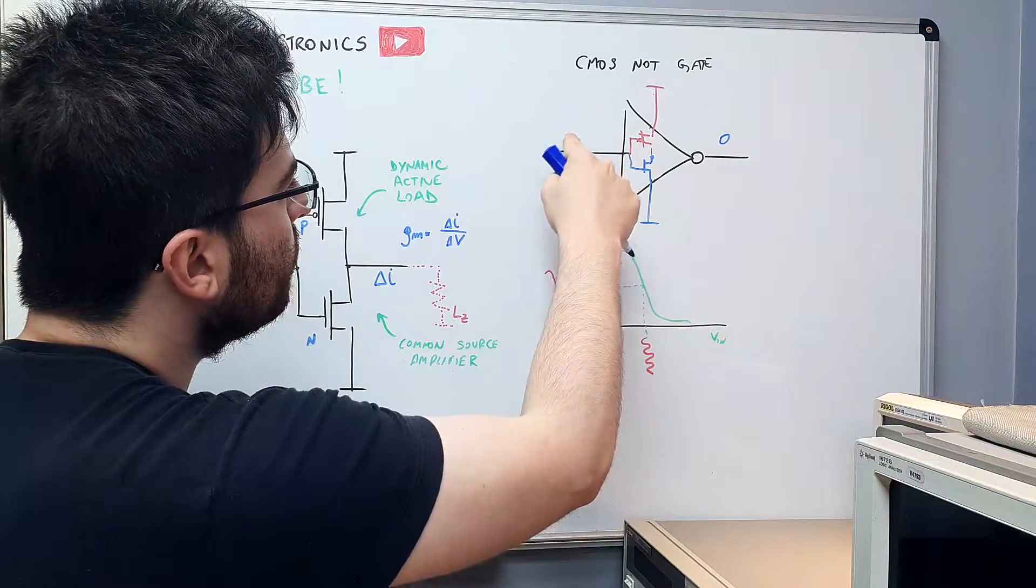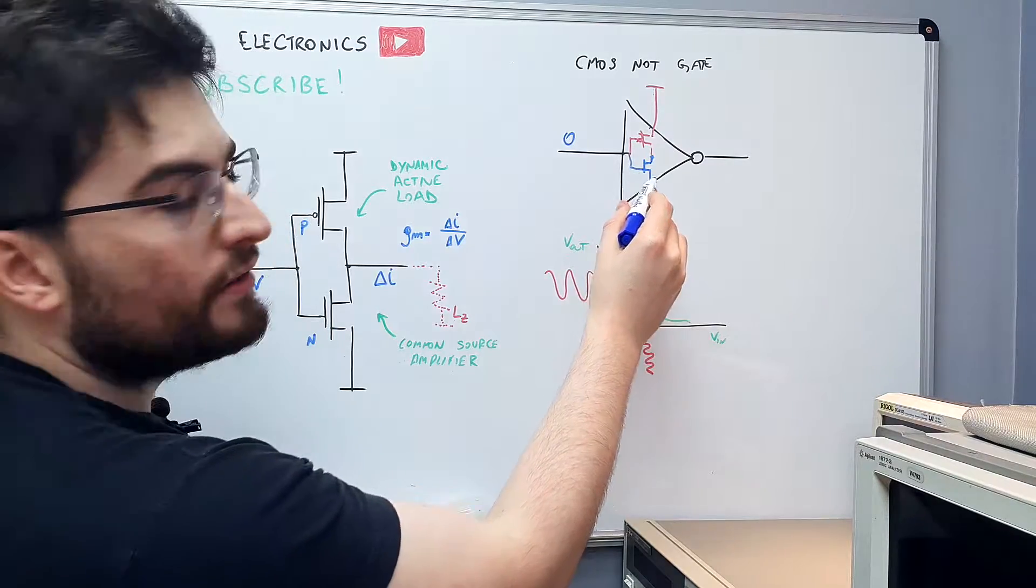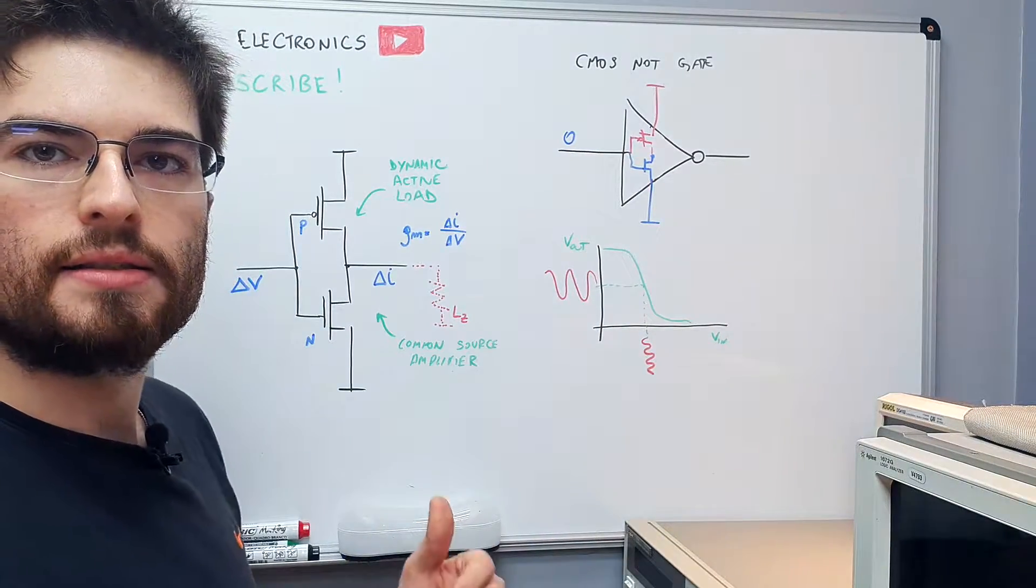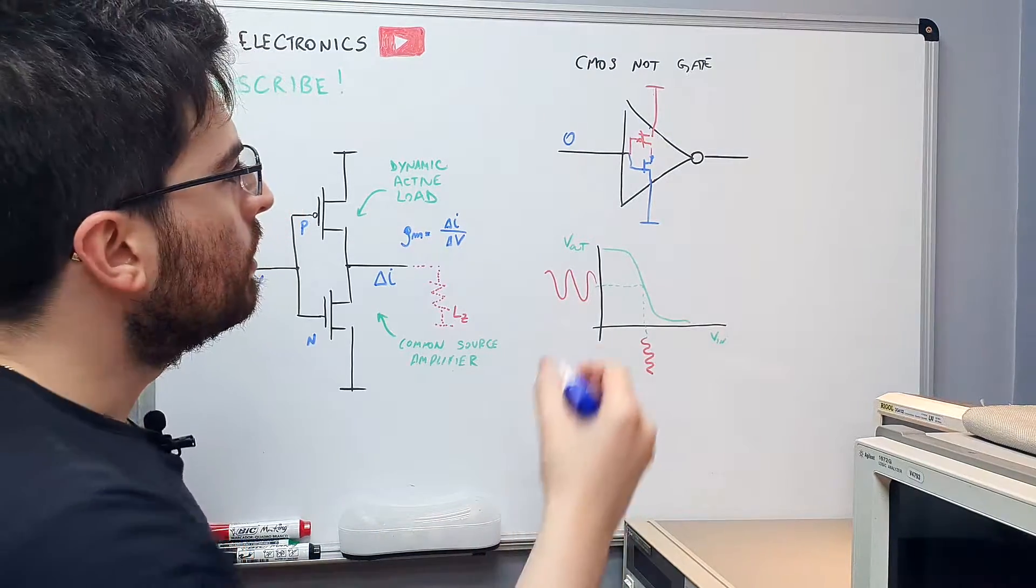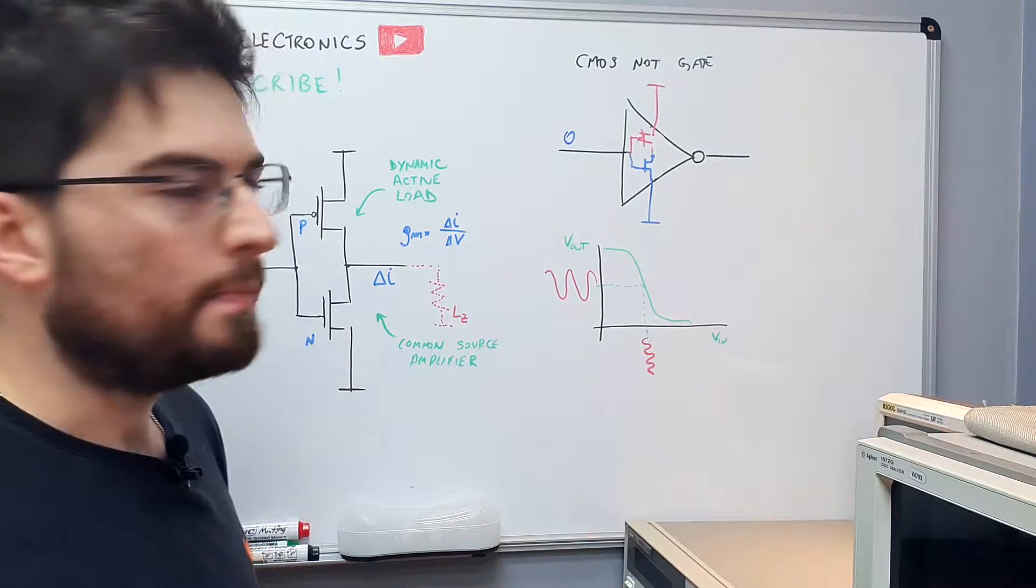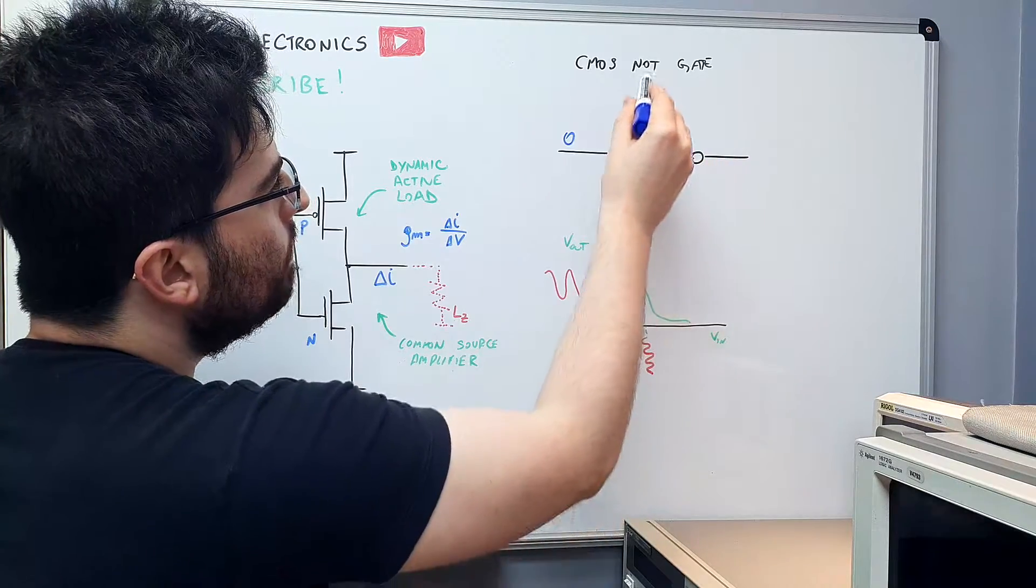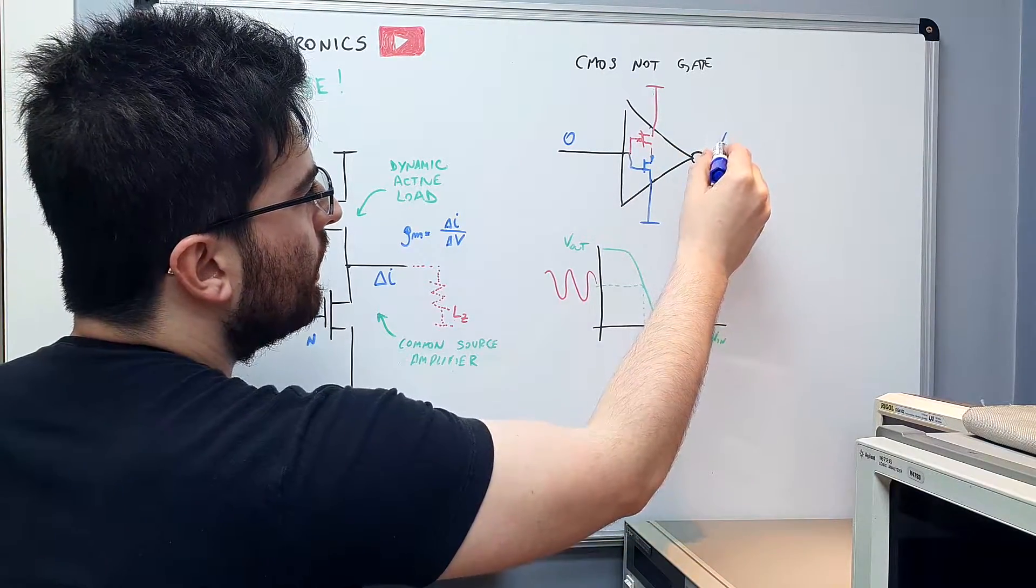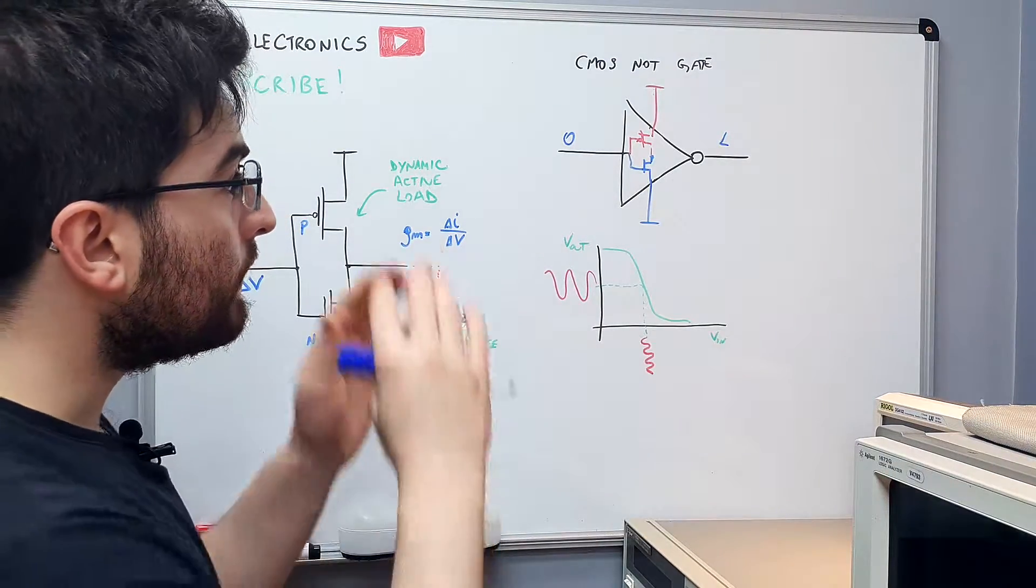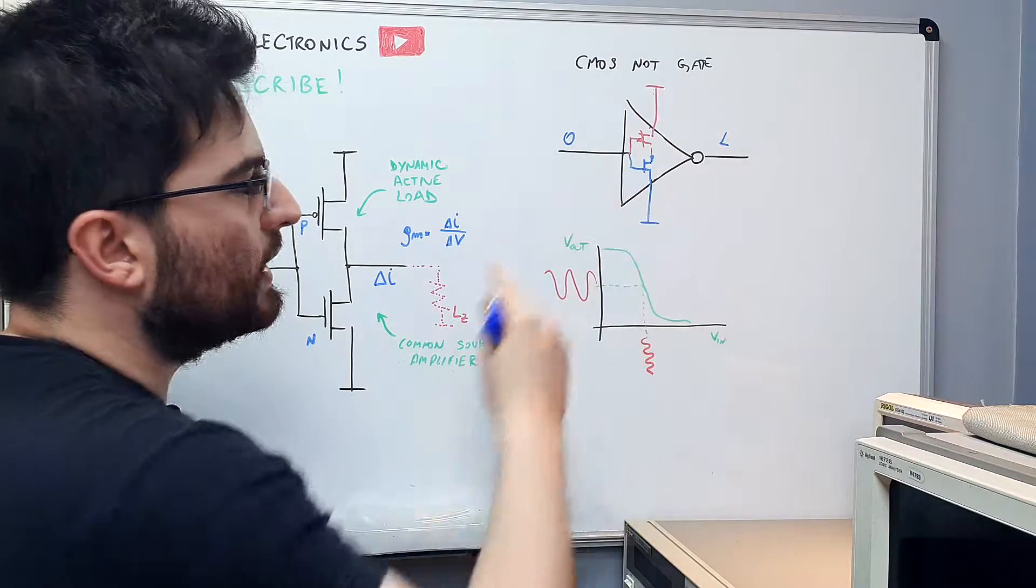When you have a zero on the input, the NMOS device is turned off and the PMOS device is turned on, because the P device works in the reverse way. So the P device being on, it pulls up the output and you have a one logic signal in the output. This is the large signal response of this complementary setup.